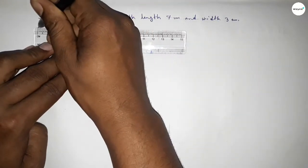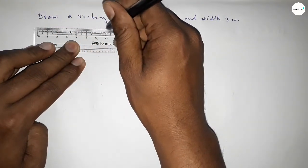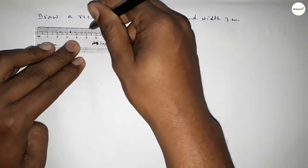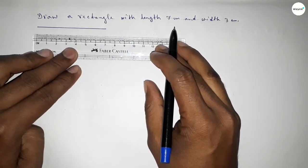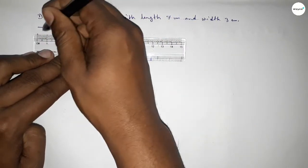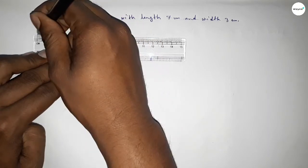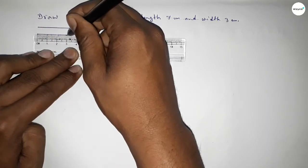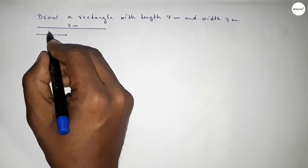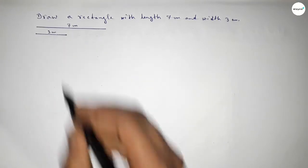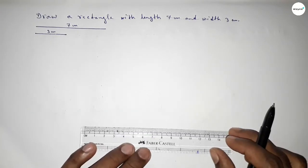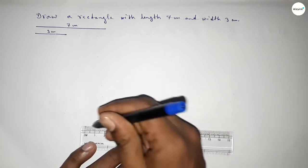First we draw a line of length 7 centimeter — this is 7 — and another line of 3 centimeter — this is 3. So this one is 7 centimeter and this one is 3 centimeter.